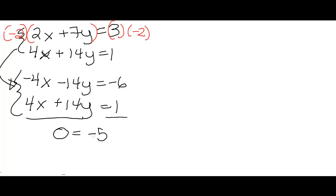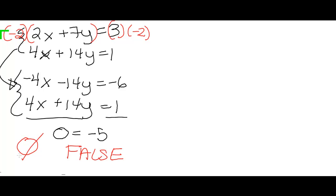This is a problem — our variables went away, and we got a false statement: 0 does not equal negative 5. Whenever your variables go away and you end up with something like 0 equals 0 or 0 equals negative 5, you need to ask yourself whether the result is true or false. In this case the result is false, so the answer is no solution. If the result had been true, there would be an infinite number of solutions.